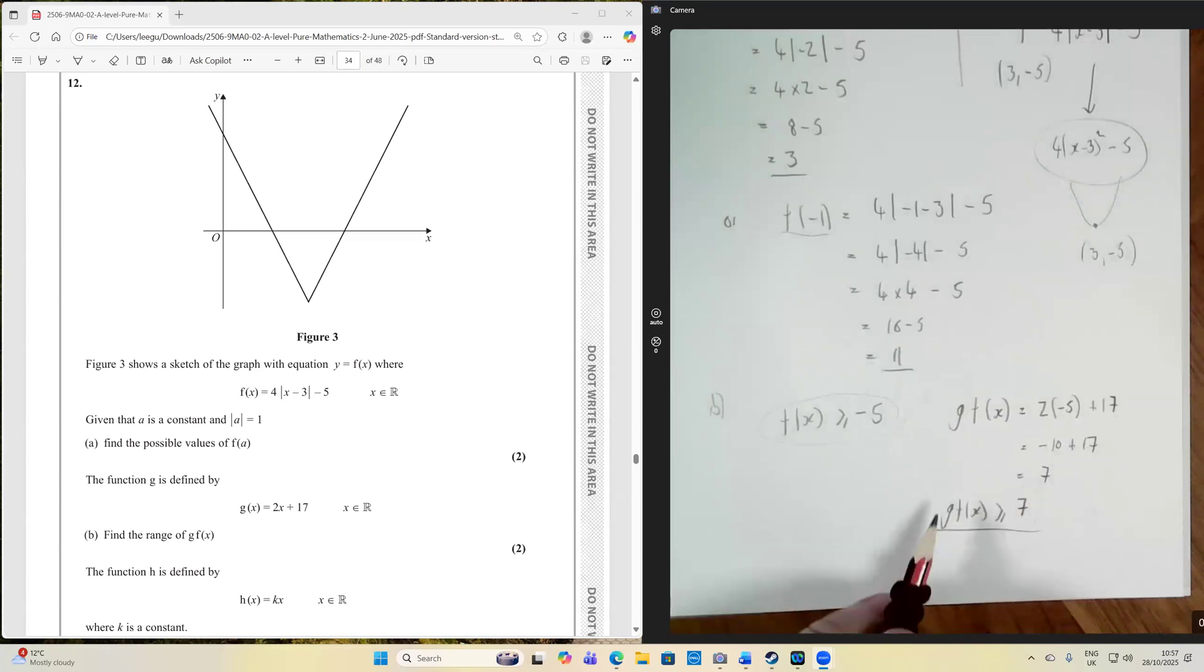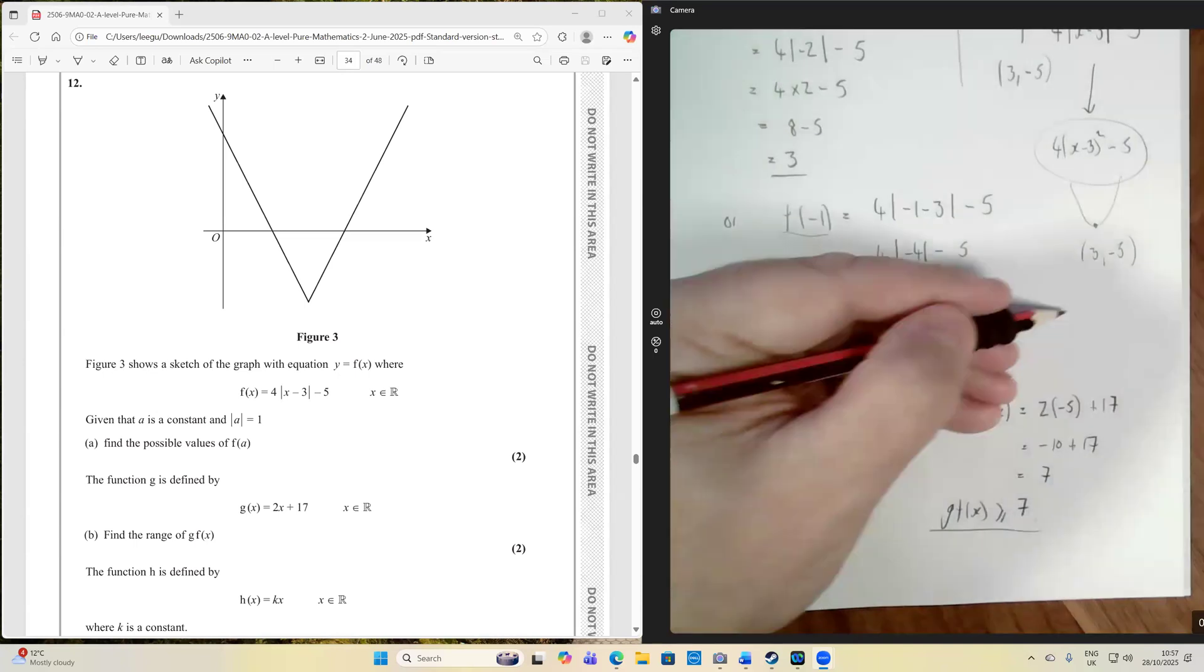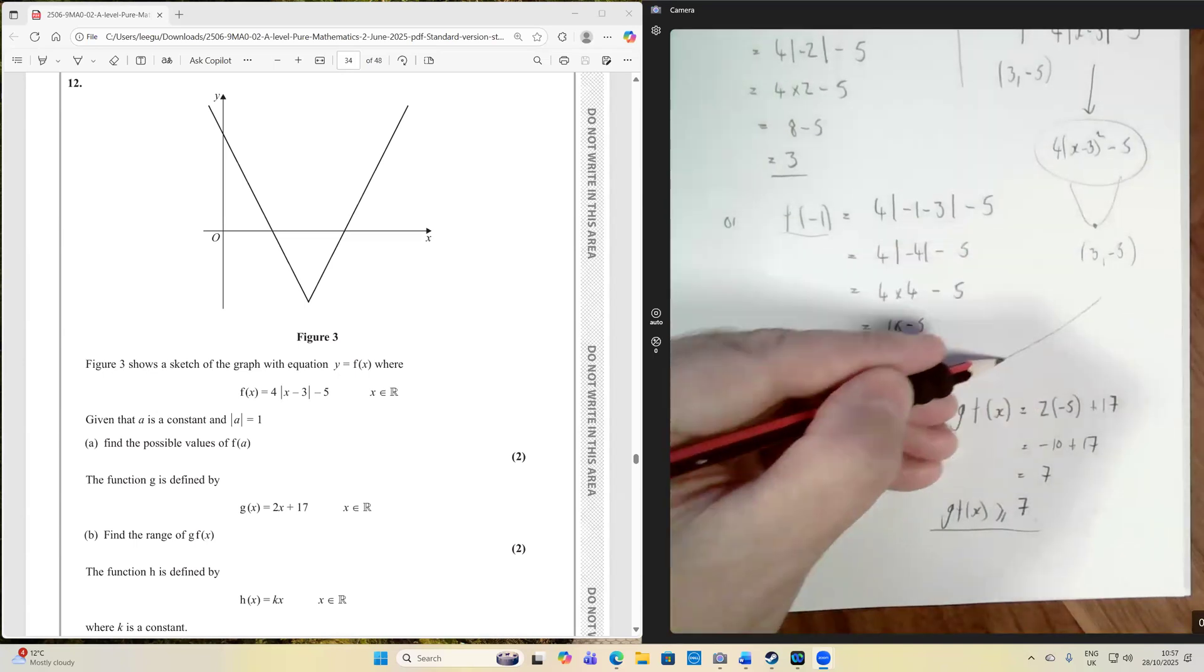So therefore, the smallest value of g of f of x is going to be 7. So g of f of x has a range that is greater than or equal to 7. And how do we know that? Well, g of x is just a straight line.